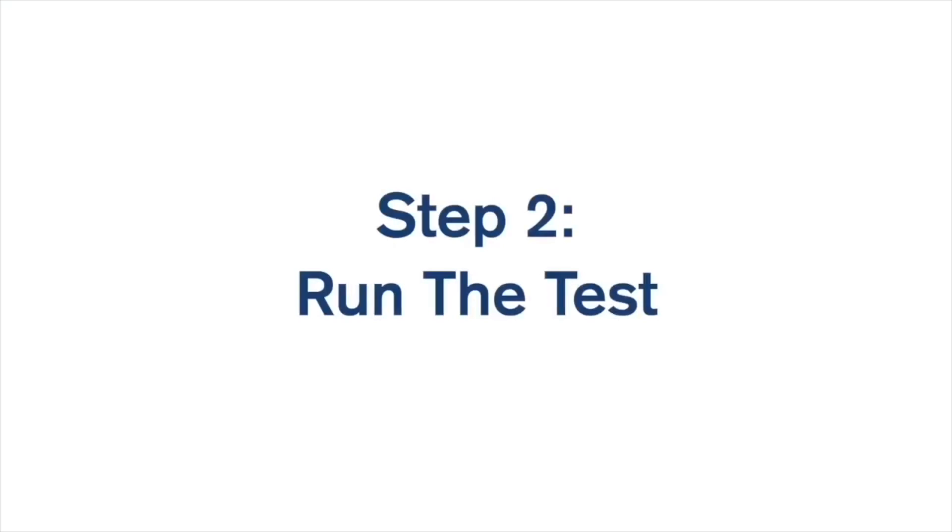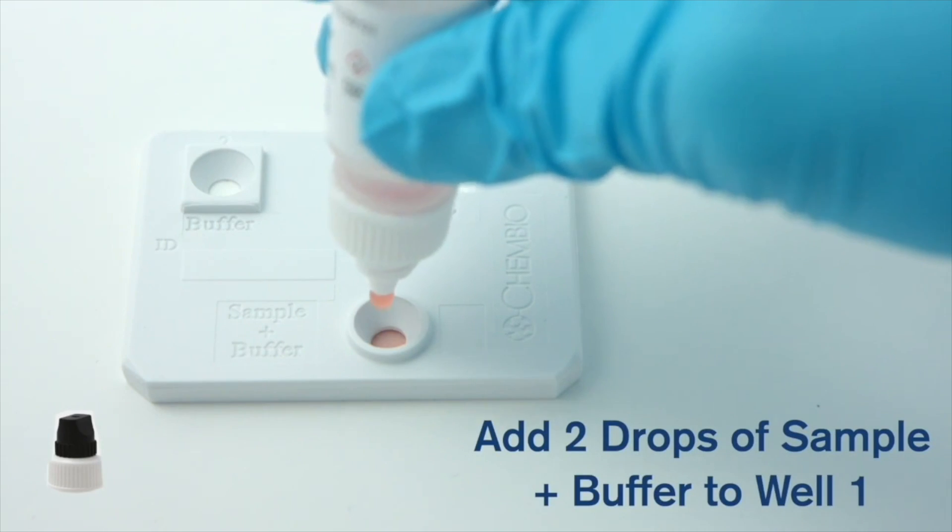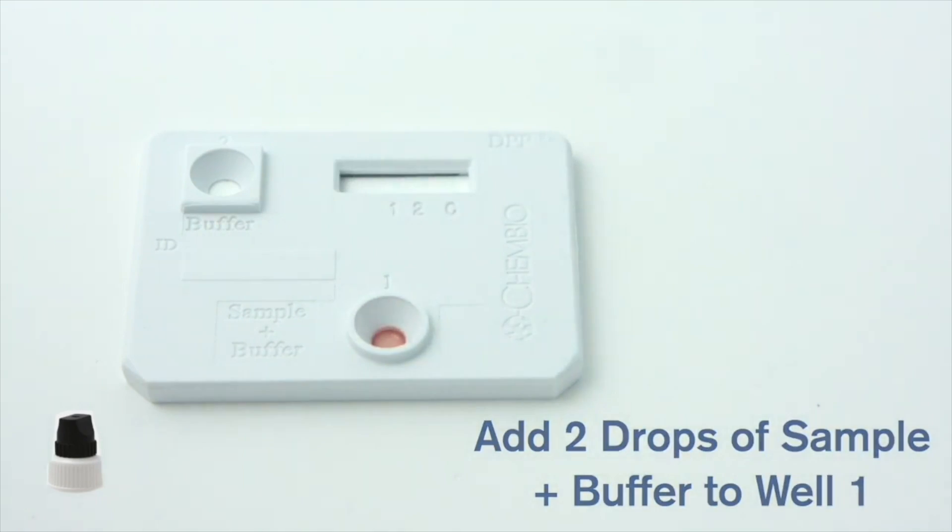Step 2: Run the test. Unscrew the black cap while leaving the white cap in place on the bottle. Invert the sample tainer vertically over the sample plus buffer well 1. Add 2 drops into the well.